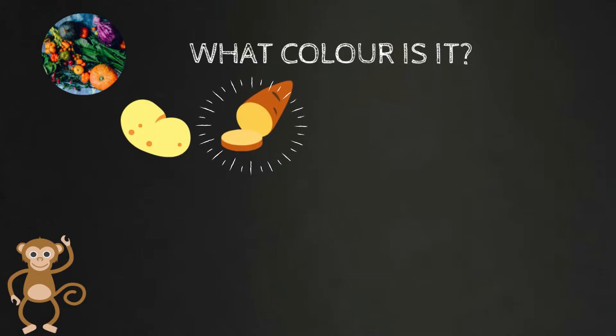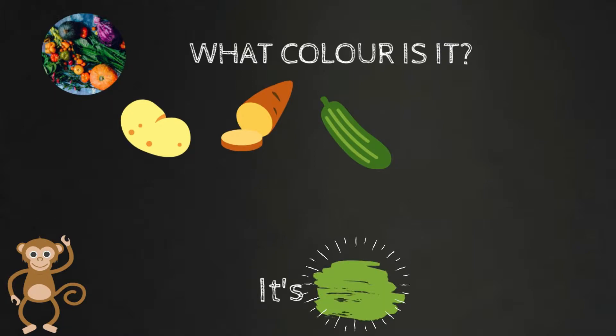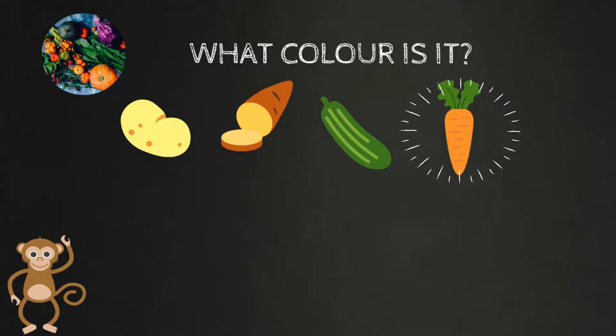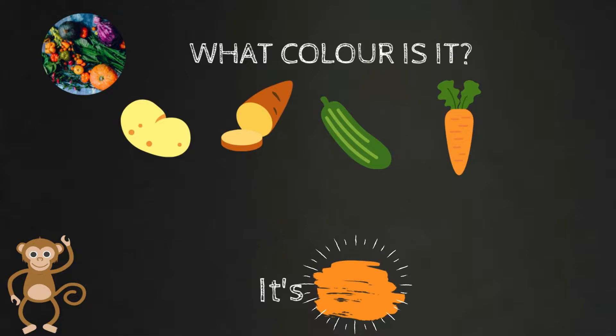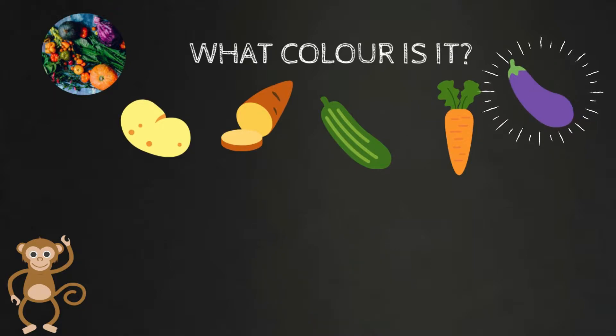This is a sweet potato. What color is it? It's brown. This is a courgette. What color is it? It's green. This is a carrot. What color is it? It's orange. This is an aubergine. What color is it? It's purple.